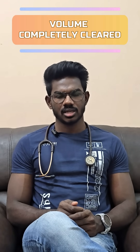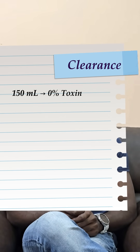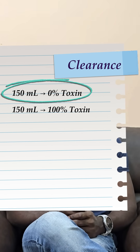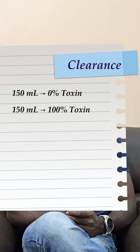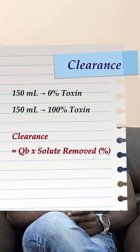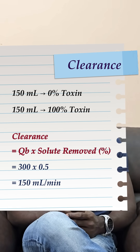Here's the part we often forget: when 50% of the toxin is removed from 300 ml of blood, we don't say 300 ml has been cleared. Because clearance means the volume of blood that has been completely cleaned, not partially cleaned. So if 50% of the toxin diffuses out, think of it as 150 ml with 0% toxin and another 150 ml with 100% toxin — the clearance is only 150 ml per minute. This is why we calculate dialysis clearance as blood flow multiplied by the fraction of solute removed: 300 ml per minute × 50% = 150 ml per minute clearance.